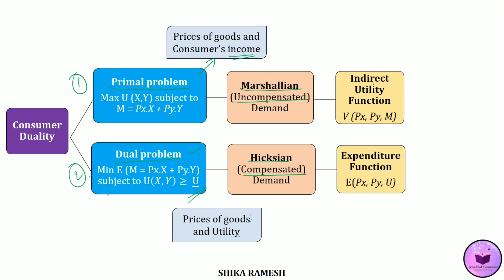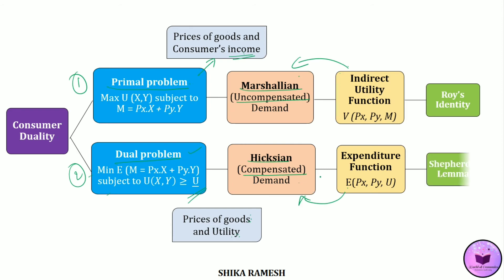From the indirect utility function, we can directly find out the Marshallian demand for good x or y using a formula known as Roy's Identity. Similarly, from the expenditure function, we can find out the Hicksian demand for good x or y directly using a formula known as Shephard's Lemma. This is the overall picture of duality in consumer theory.